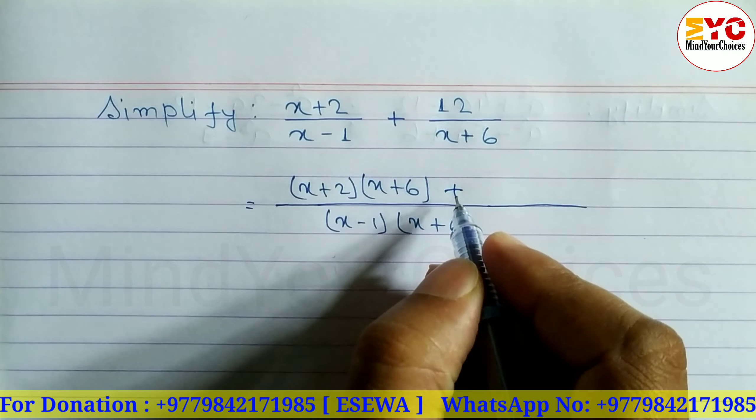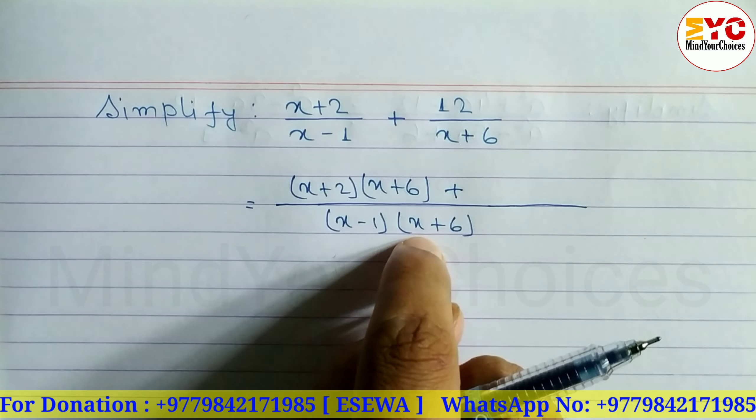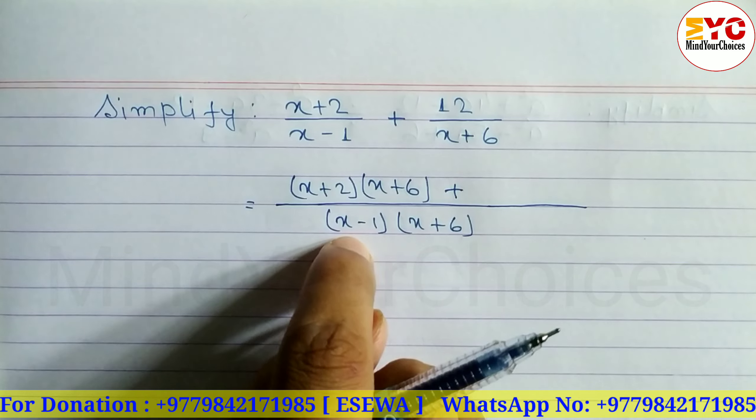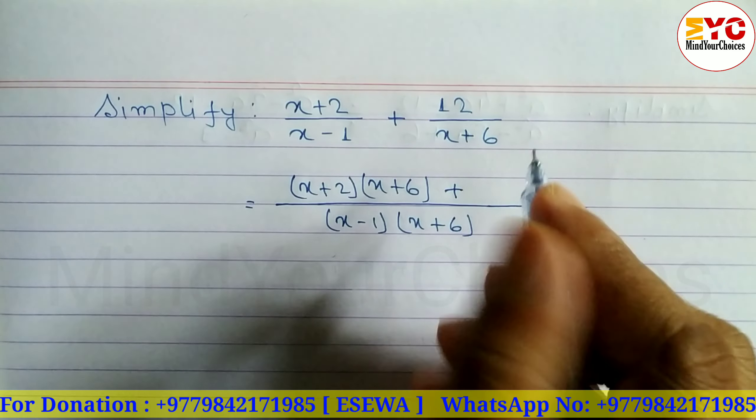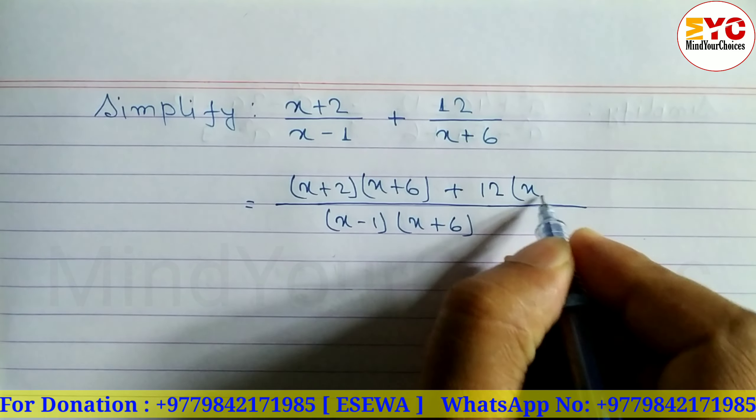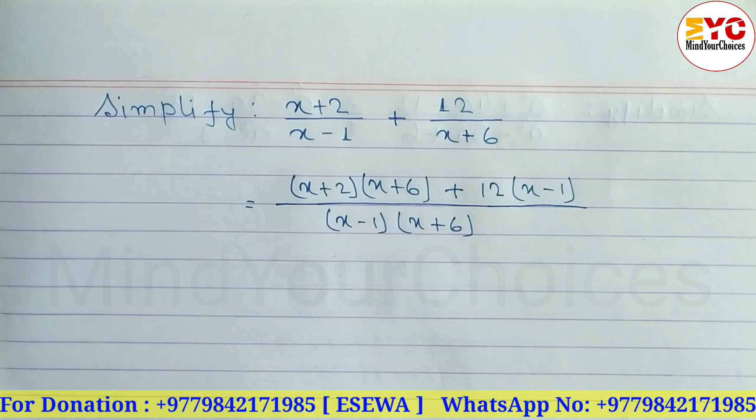Plus - then divide the denominator. x plus 6 cancels with x plus 6, what remains is x minus 1. Multiply that with 12. So 12 times x minus 1. Hope you understand up to here. This and this we have to multiply.